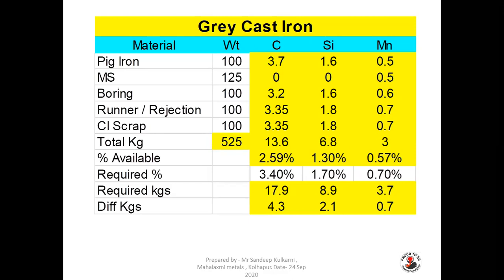Now we have to get the difference between required and available elements. The difference is 4.3 kg of carbon required to achieve the desired 3.4% in the bath. Similarly, 2.1 kg of silicon is required and 0.7 kg of manganese is required. So if you add 4.3 kg of carbon you will get 3.4% carbon in the bath.